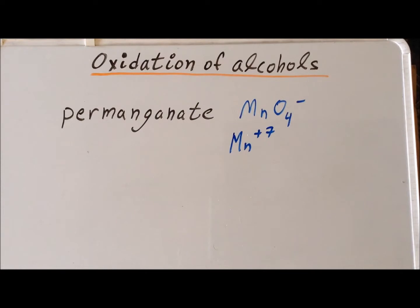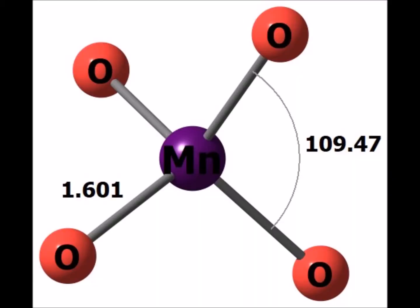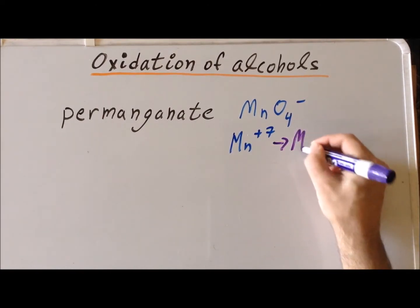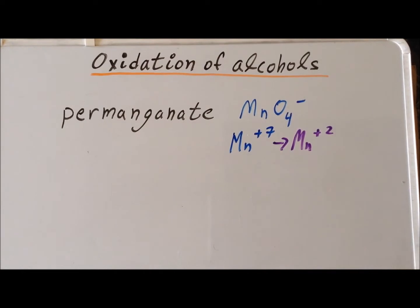Permanganate has the structure as shown in the following diagram. In acidic solution, the manganese plus 7 ion is reduced to manganese plus 2, so this in acid solution is a 5-electron reduction. It is also particularly useful because manganese plus 7 has a distinct purple color, whereas manganese plus 2 is virtually colorless.